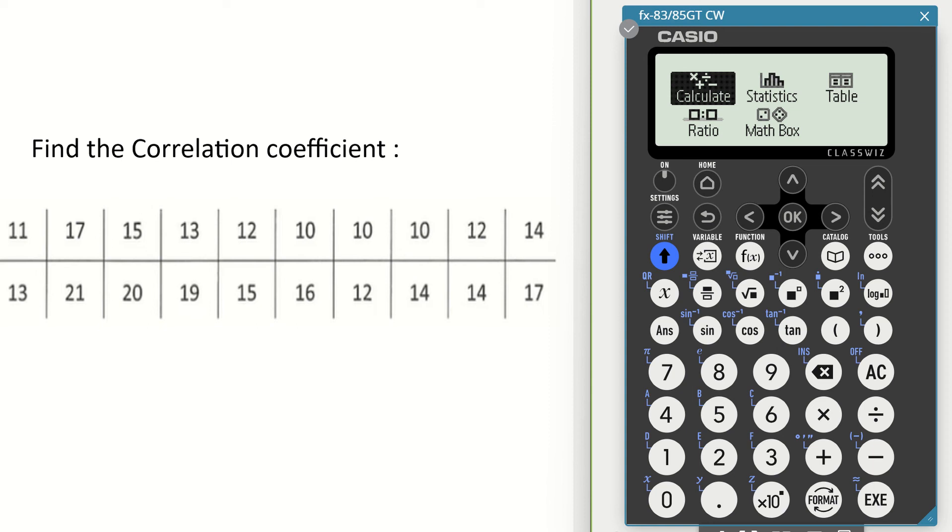In this video we're looking at how to find the correlation coefficient from the Casio FX-83 and 85GTCW calculator. Before we begin, make sure that you have reset your calculator first. When you've reset your calculator, the screen will look like this.